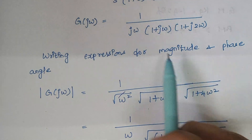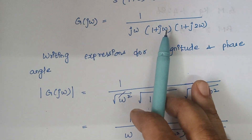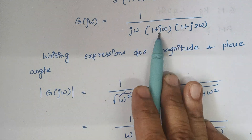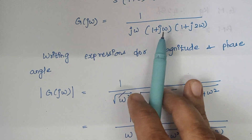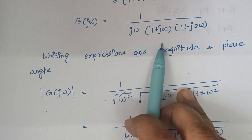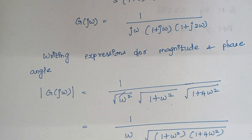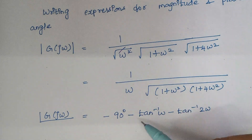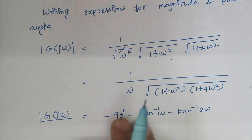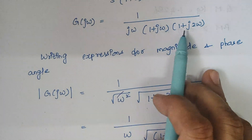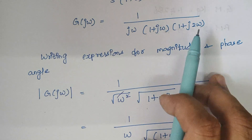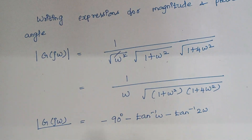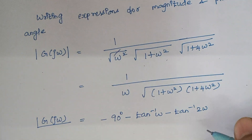Similarly, tan inverse of the imaginary coefficient divided by the real term gives tan inverse of omega by 1, which when rewritten is minus tan inverse of omega. And here it is tan inverse of 2 omega by 1, so it becomes minus tan inverse of 2 omega.